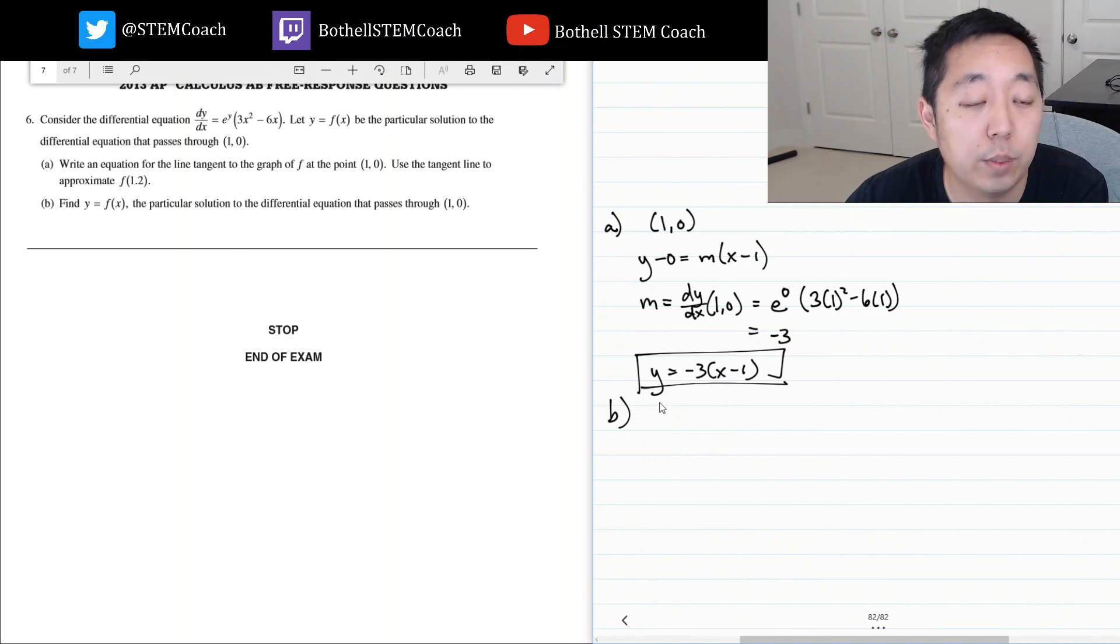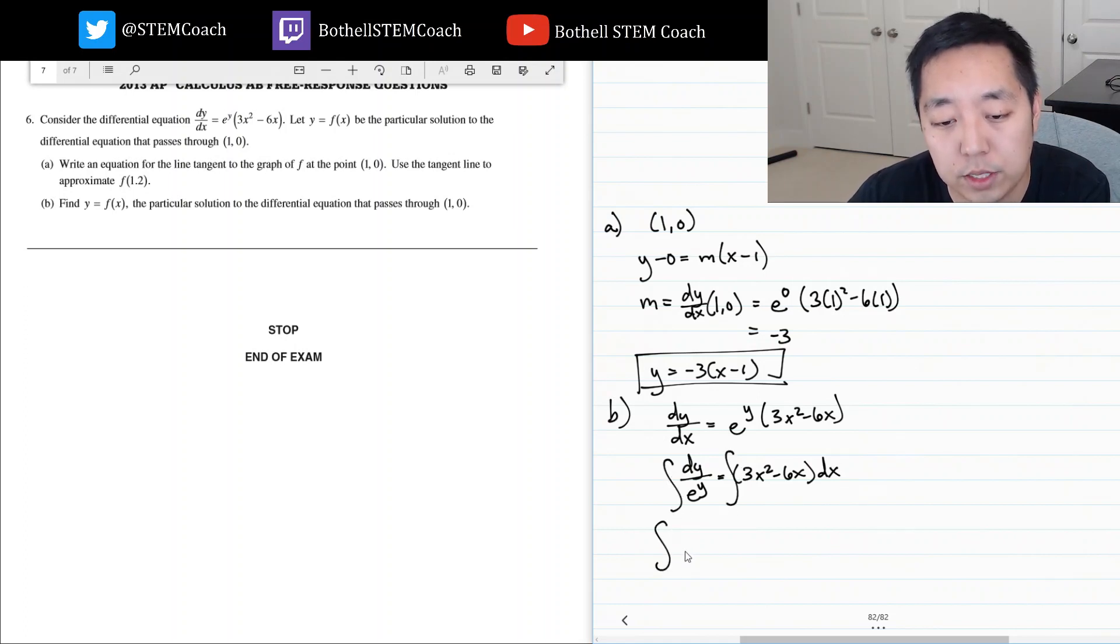Find the particular solution by actually solving this differential equation. Okay, so dy dx equals e to the y three x squared minus six x dx. Then I can integrate both sides. This side seems pretty easy. This side I want to rewrite as e to the negative y dy.